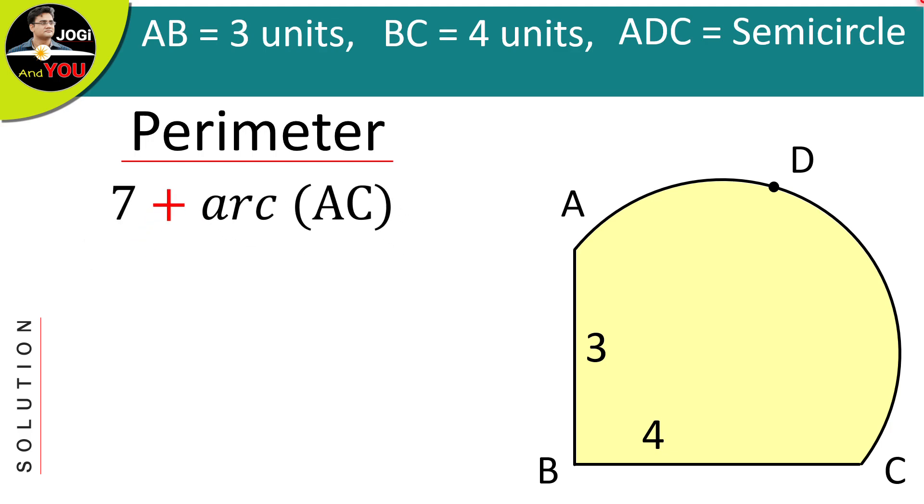This means, if we draw this line here, then this upper part ADC will be a half circle and this AC will be its diameter. Now, the diameter of this semicircle is the hypotenuse of this right triangle ABC.